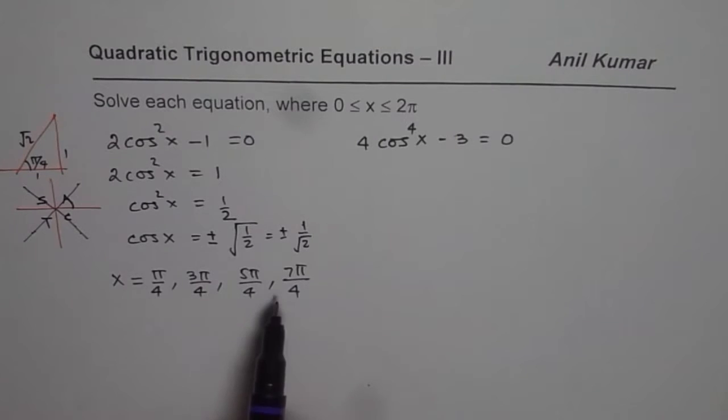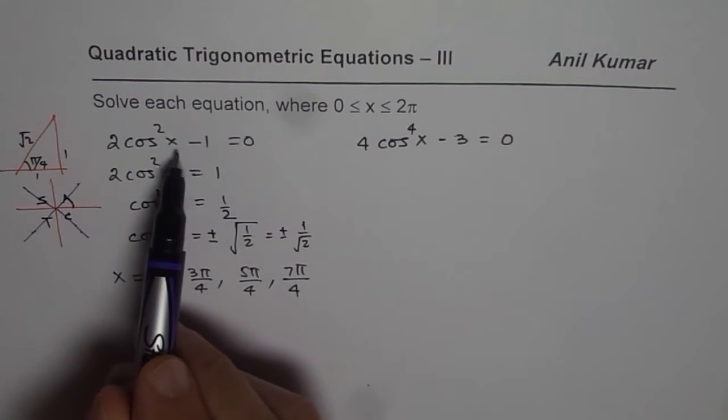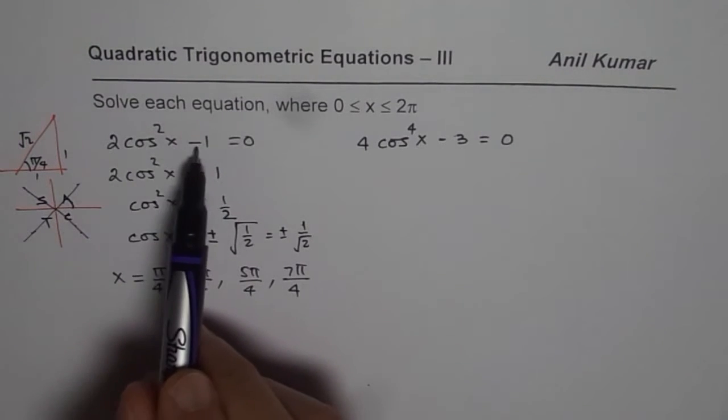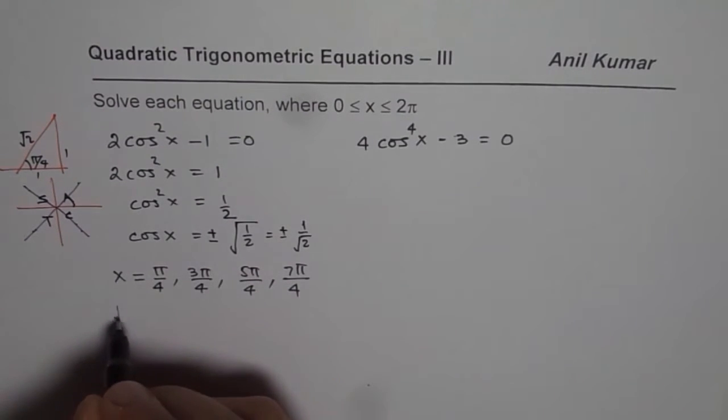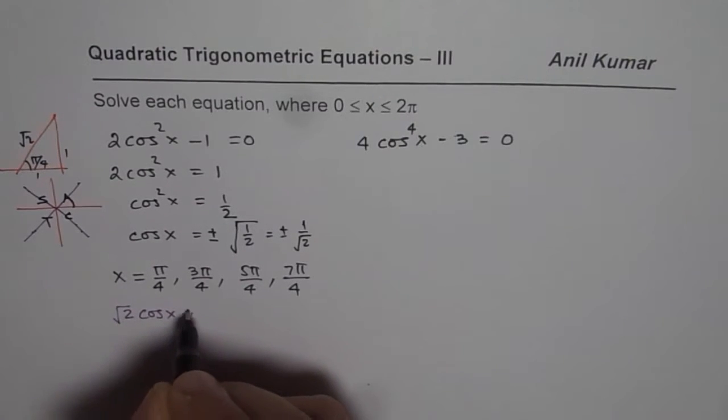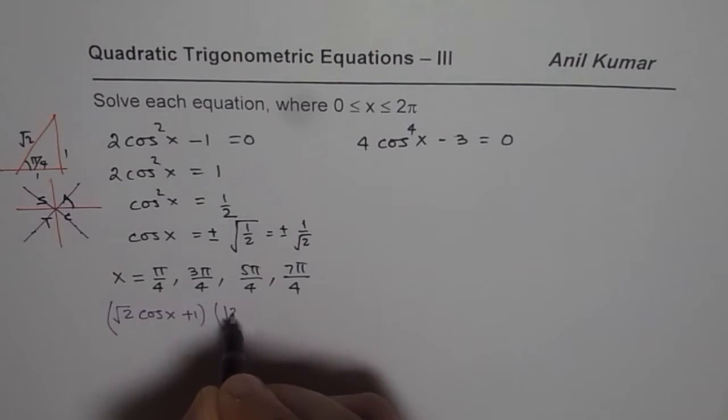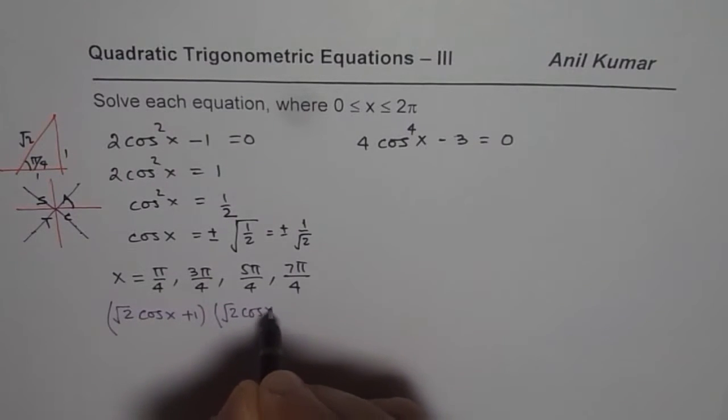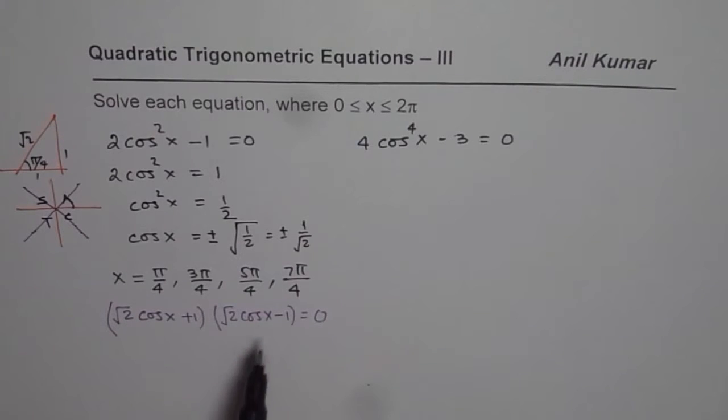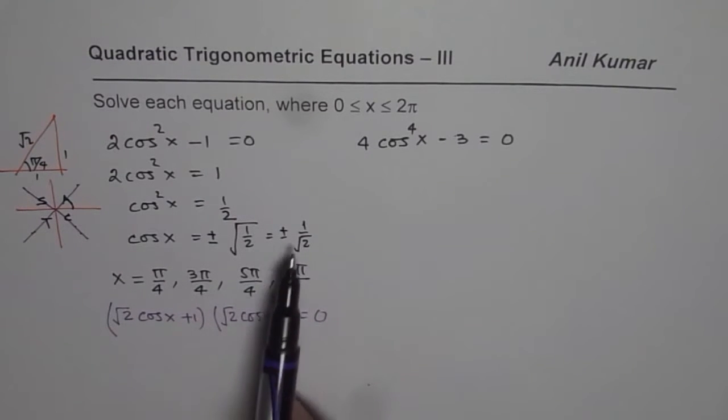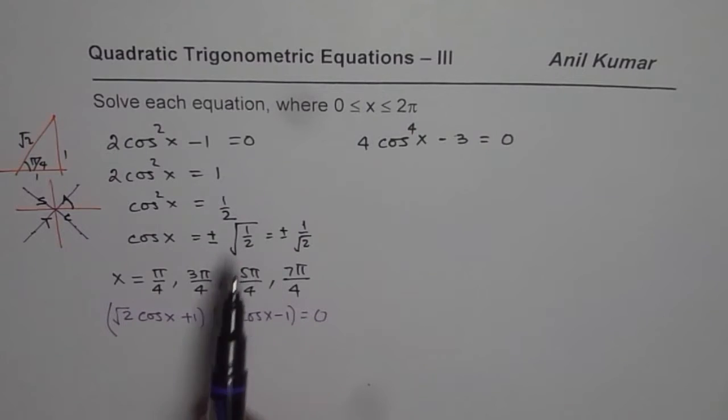At times, that is the solution. At times, what you can also do here is that you can factor this as difference of squares. So in that case, you could write this equation as (√2cosx + 1)(√2cosx - 1) = 0. And then equate each factor to 0 and find your solution. So you get the same answer. This question could also be asked in this particular fashion.